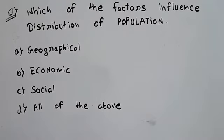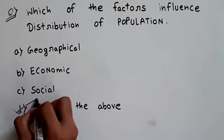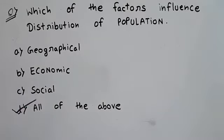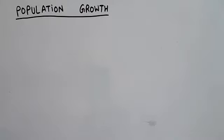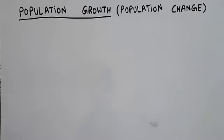The next question: which factors influence the distribution of population? Option A: geographical, B: economic, C: social, D: all of the above. The correct answer is option D, all of the above. This video is about population growth and population change.